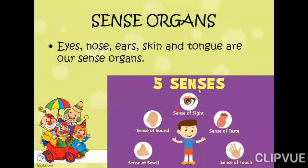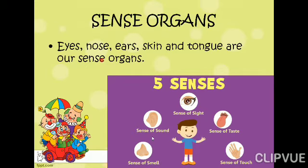Eyes are used for the sense of sight — sight means to see. Nose is used for smell — we can use our nose to smell different things. Ears are used for sound — we can hear different types of sounds with the help of our ears.